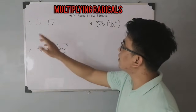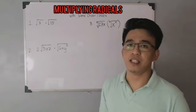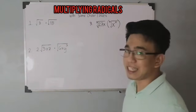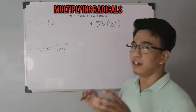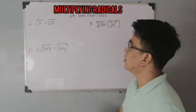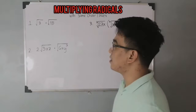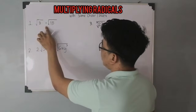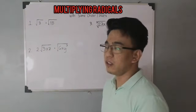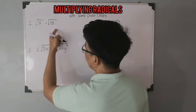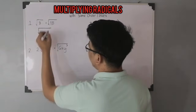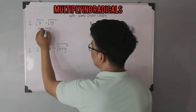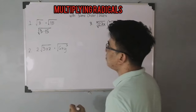In item number 1, we are given the square root of 3 times the square root of 15. Since we are multiplying radicals with the same index, all you need to do is copy your radical sign and then multiply the radicands. So you have 3 times 15.